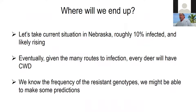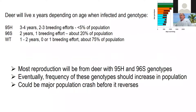Where will we end up? A deer is going to live a certain number of years depending on the age when infected and the genotype. A 95H deer might make it three or four years and have two or three breeding efforts, constituting about 5% of the population. The 96S might manage one or two breeding efforts. Wild-type deer may have zero or one. So most reproduction will be from deer with the 95H and S variants, but if CWD continues to increase, there could be a major population crash before these genotypes become more prevalent.